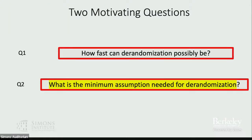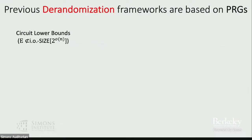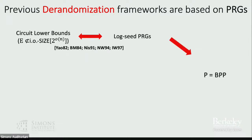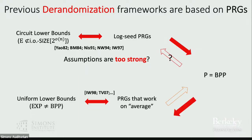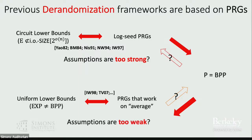Now moving to the second question: what is the minimum assumption needed for de-randomization? Previous de-randomization frameworks are based on PRGs and they imply de-randomization. Another line of work shows it is unclear whether de-randomization requires circuit lower bounds. My work shows that assuming uniform lower bounds like NE not equal to BPP, you can get a PRG equivalent to an average-case PRG, from which you get average-case de-randomization. But it is very unclear whether you can get P equals BPP from only average-case assumptions — something is missing, and that is exactly what we are trying to fill in.